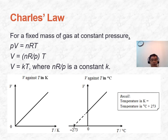For Charles' Law, volume is directly proportional to temperature in Kelvin, so V = KT, where K is a constant since nR/P is constant. Plotting V against temperature in Kelvin gives a straight line passing through the origin. However, plotting V against temperature in degrees Celsius shifts the line to the left, cutting the x-axis at −273, because 0 Kelvin equals −273°C.